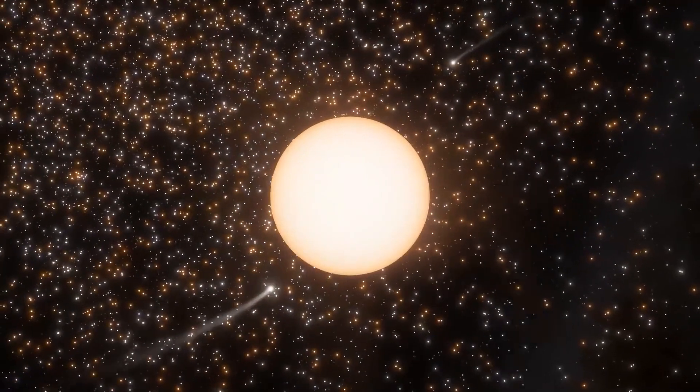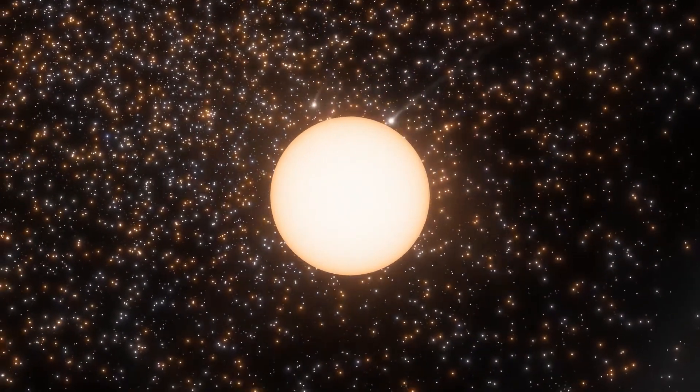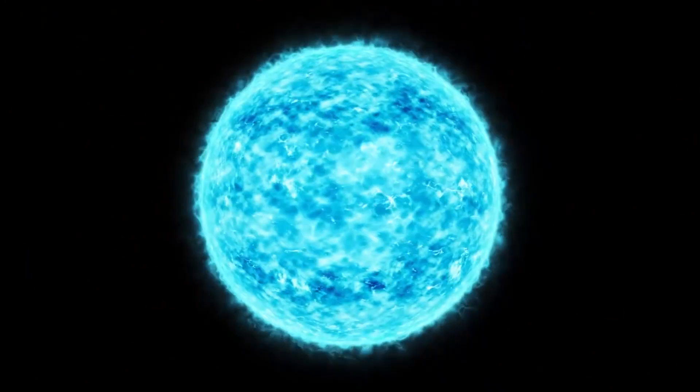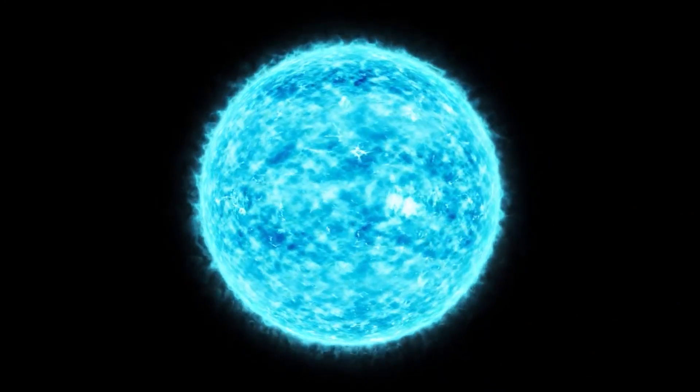In the instance of UY Scuti, the brightness fluctuates because the object is constantly growing and shrinking, making it difficult to take precise measurements of its circumference. However, like all red supergiants, including Betelgeuse, UY Scuti will end its life abruptly.